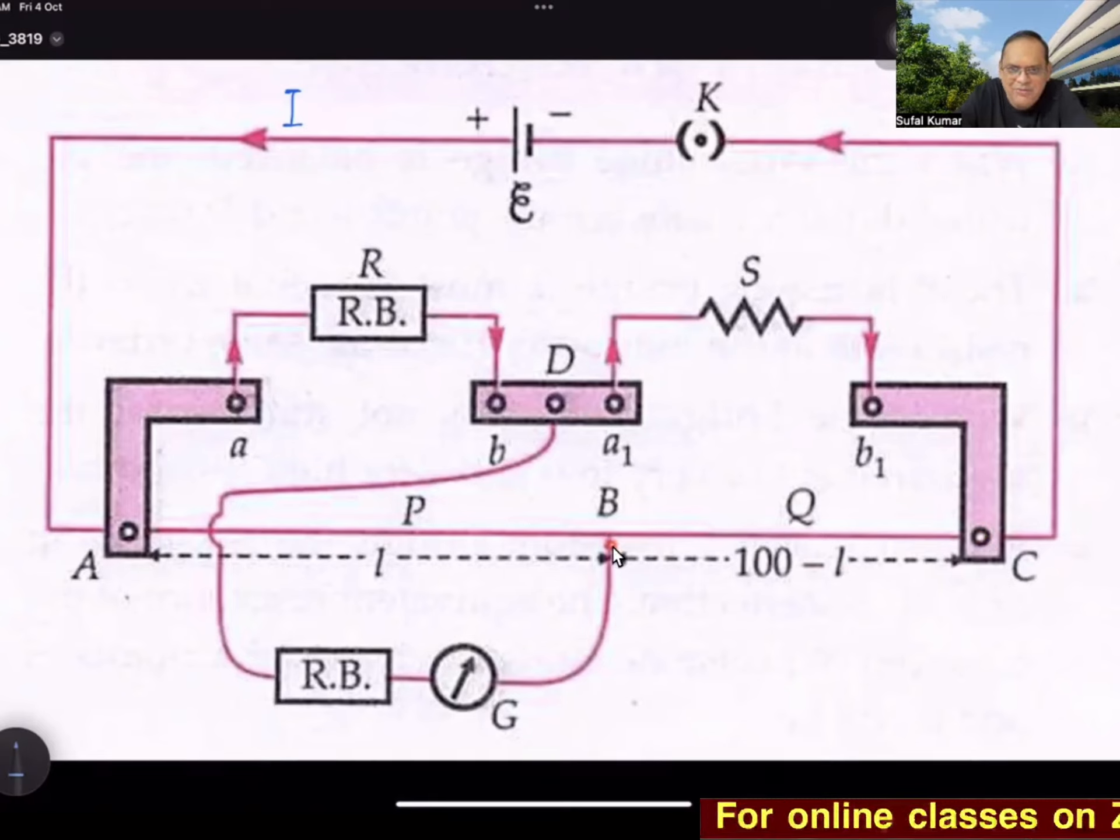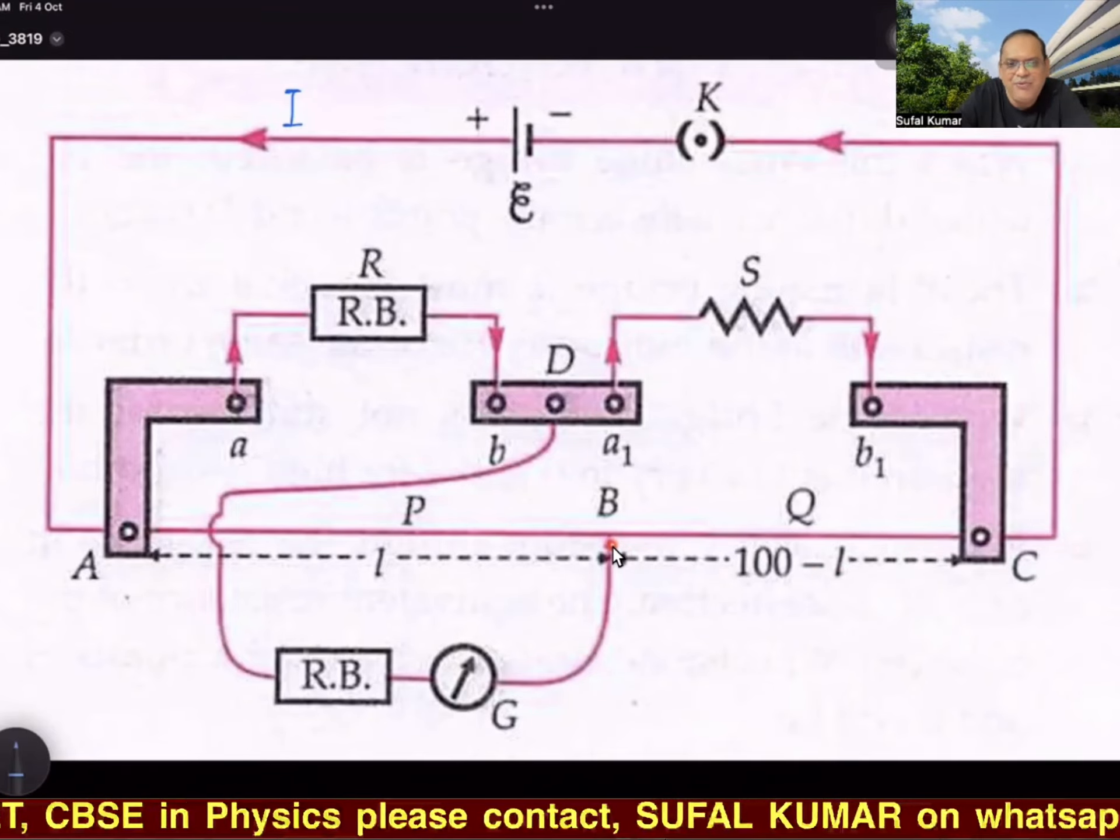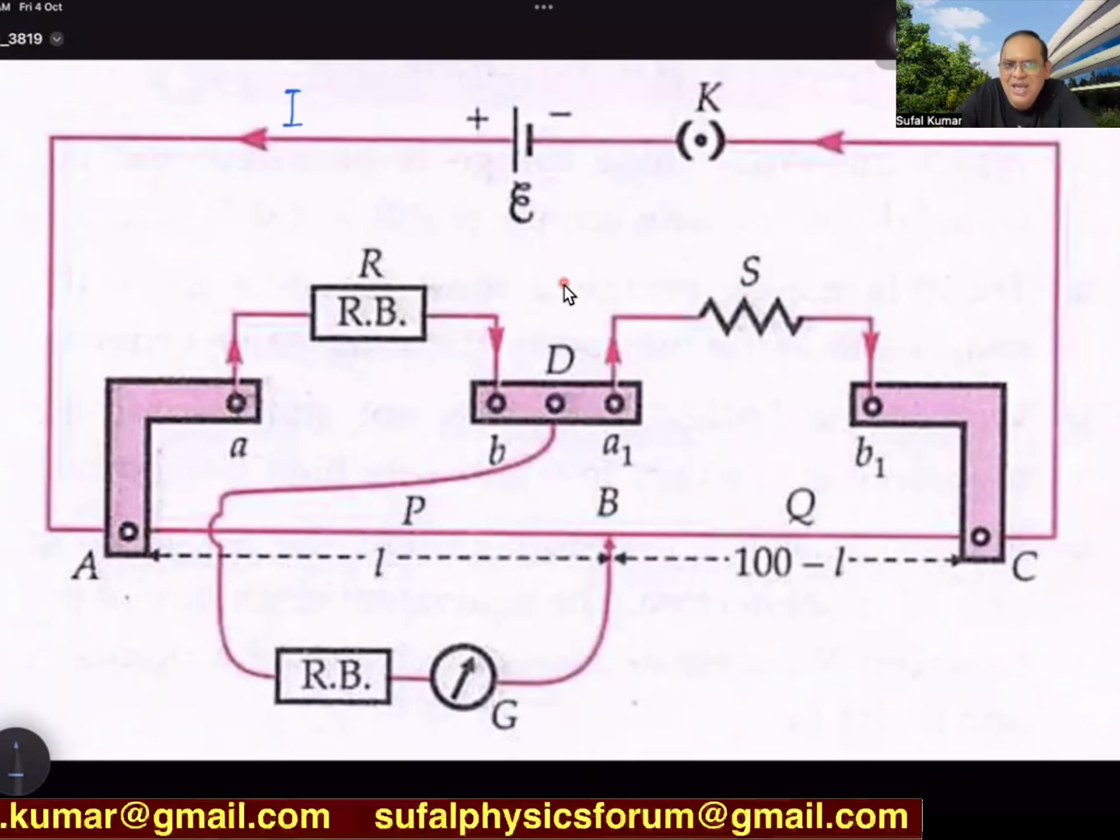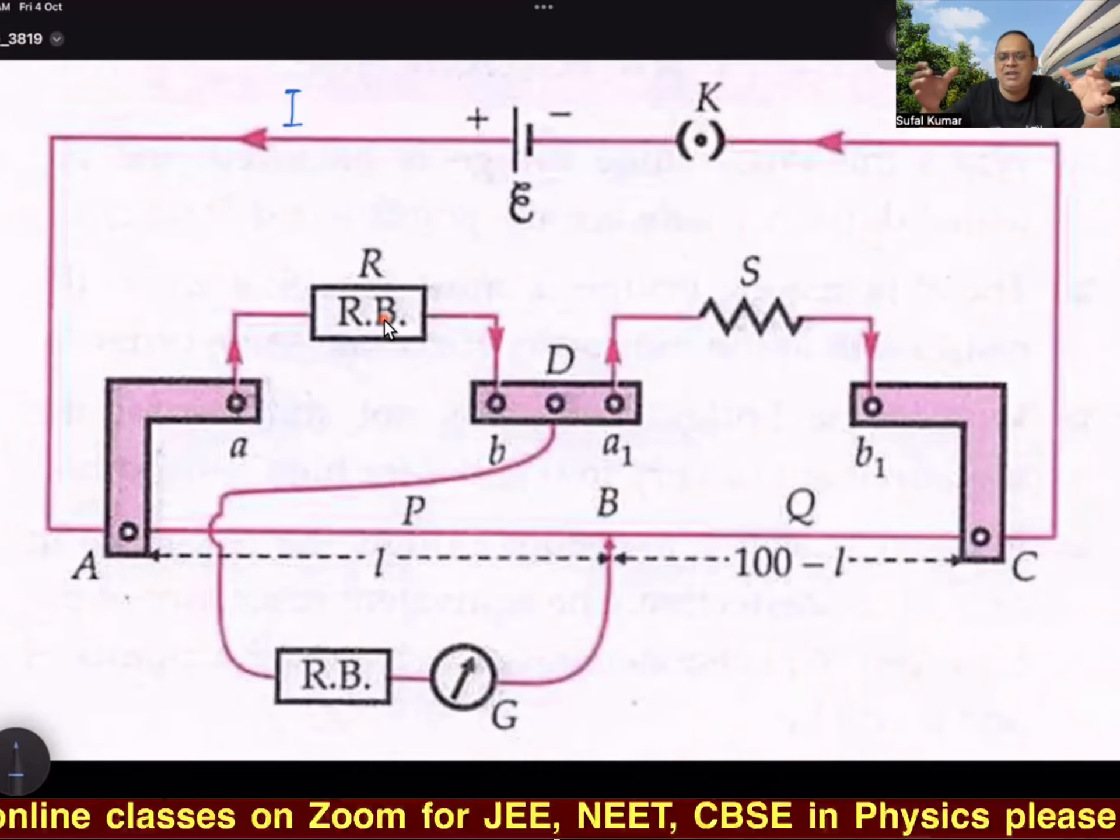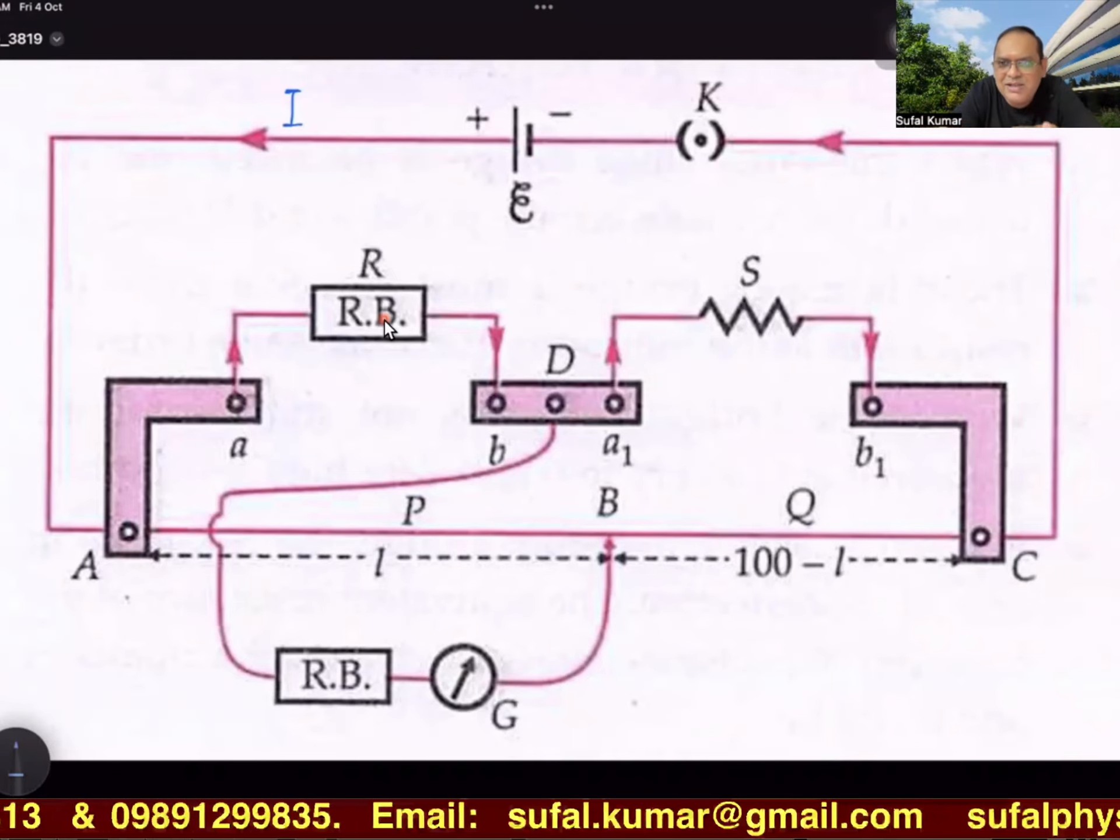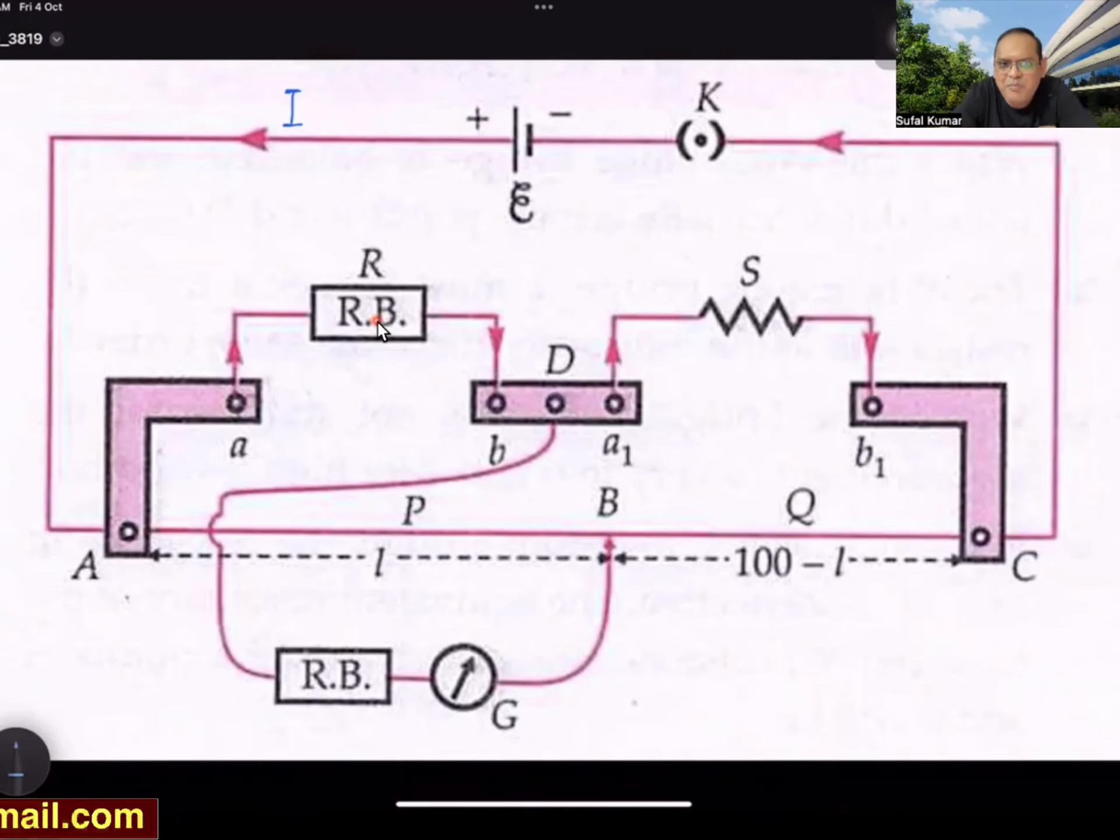At null point, from A to B is balancing length L, and this part of resistance would be considered as P. From B to C it is Q, and corresponding length will be 100 - L. Why? Because this AC part is 1 meter uniform resistance wire. It is fixed, that's why this device is known as meter bridge. Because of this sliding jockey thing, it is known as slide wire bridge.